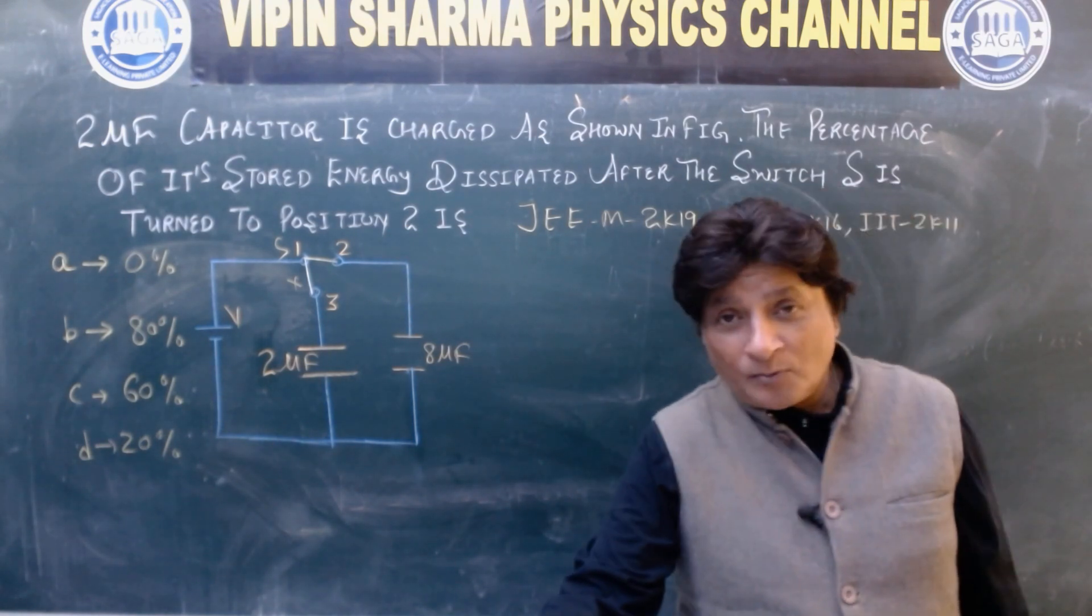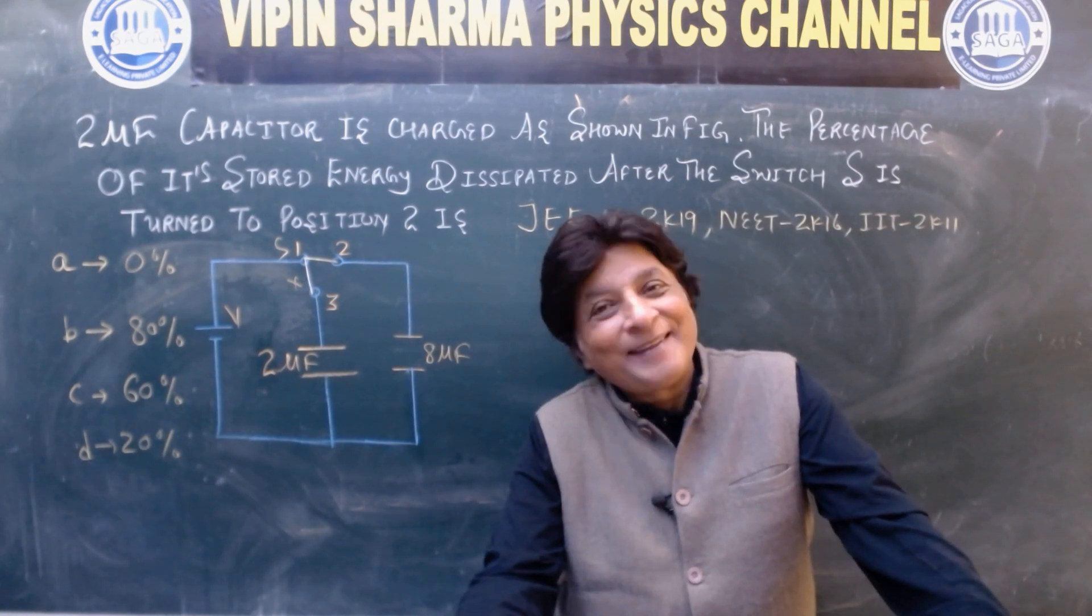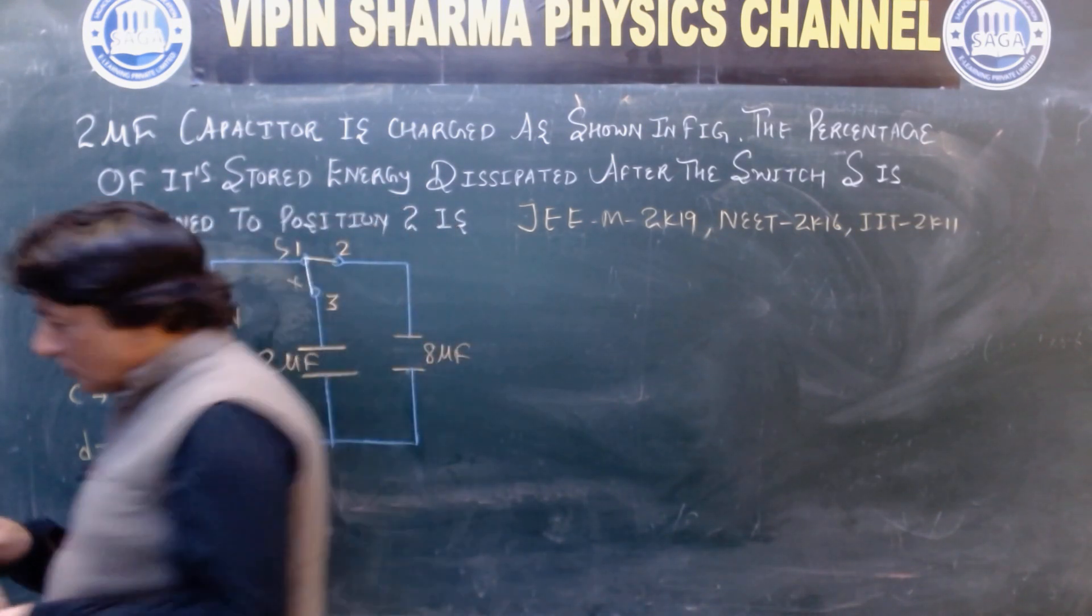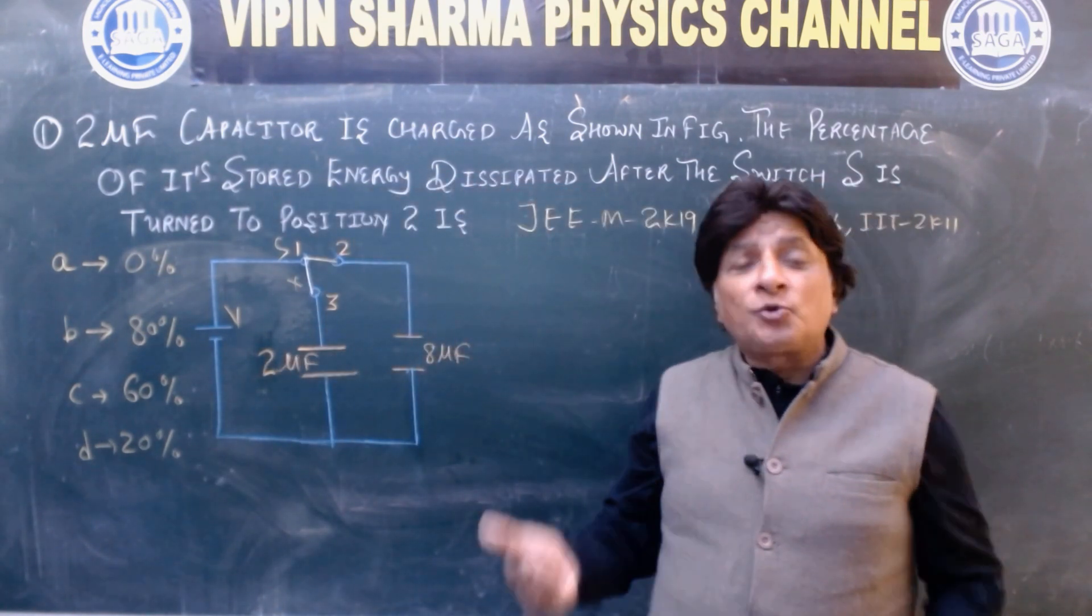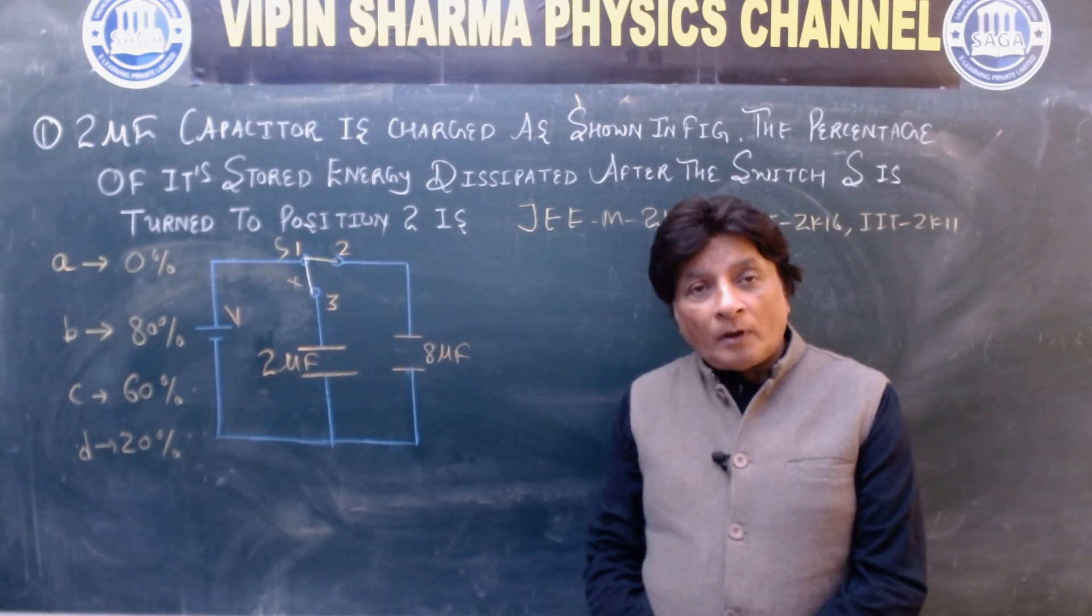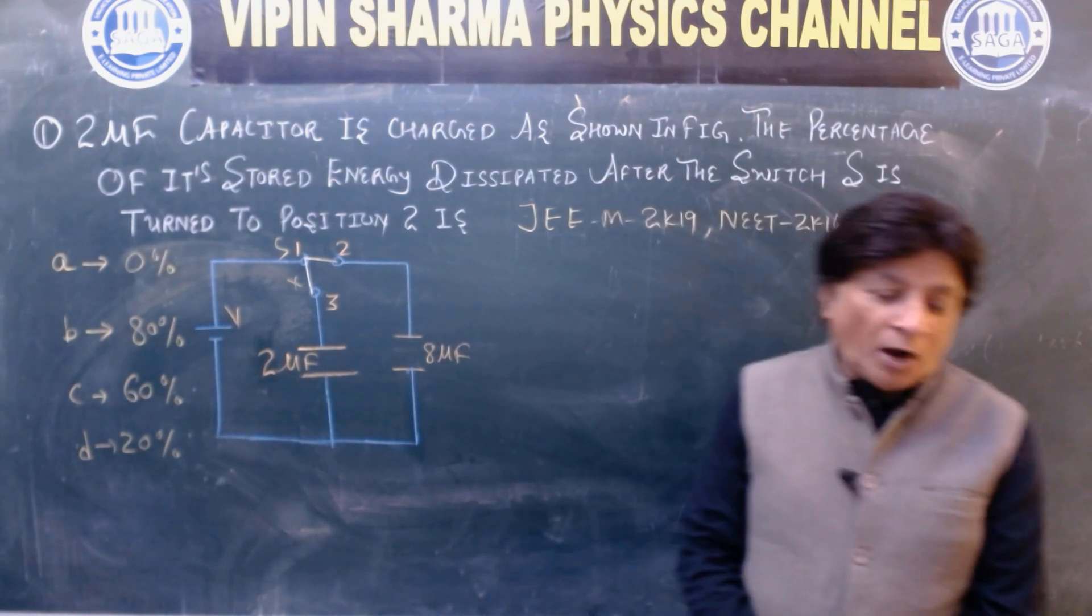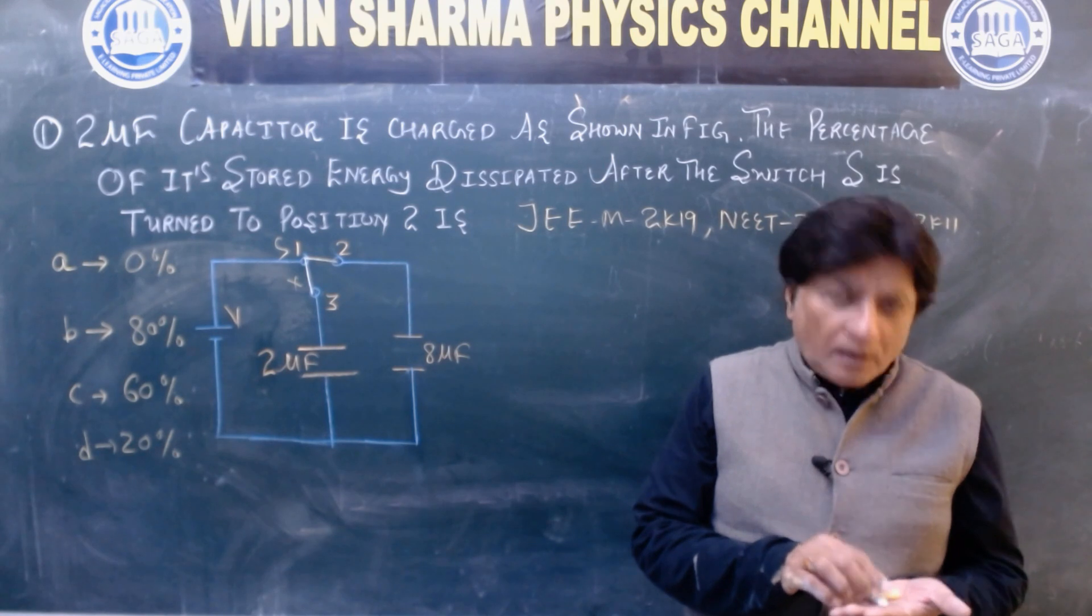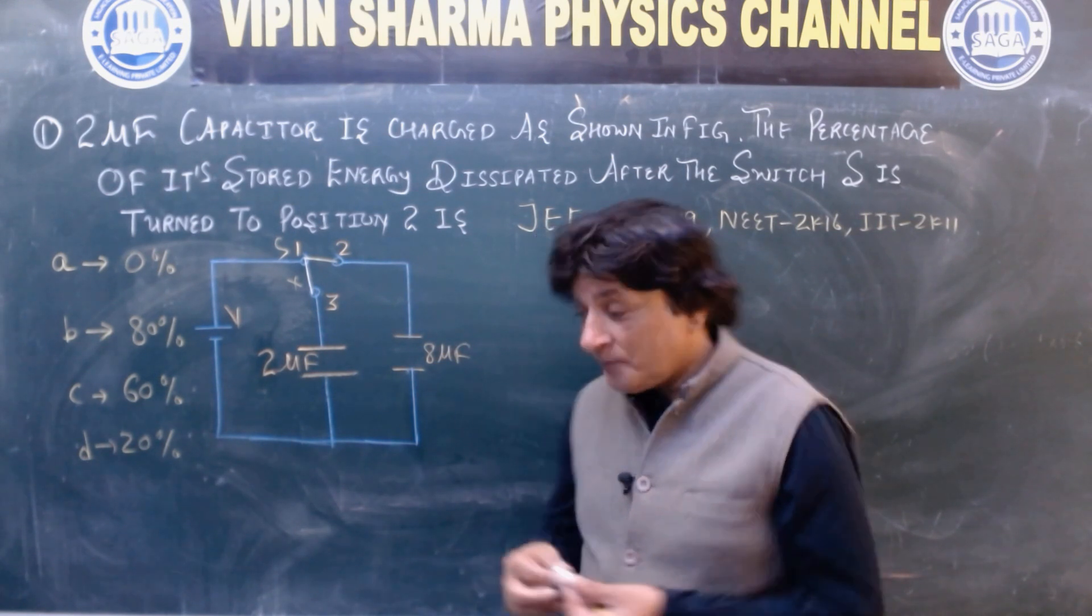After that, you play and match your solution with me. So pause it. Pause ke baad ab hum shuru karte solution, students. Ab hum is ko discuss karte. The energy stored in capacitor is half CV square, or Q square by 2C.